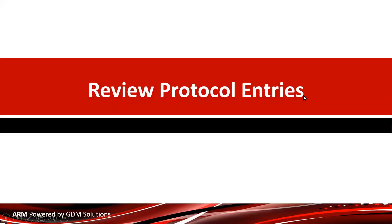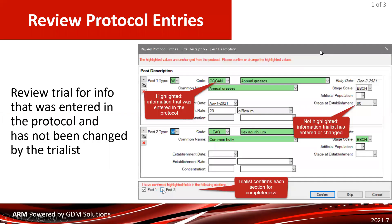First up is the biggest development project in the last ARM release. It's a new tool called Review Protocol Entries. It's a wizard that will appear during trial validation to have the user review information that was entered in the protocol and hasn't been changed since in the trial.